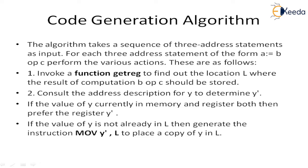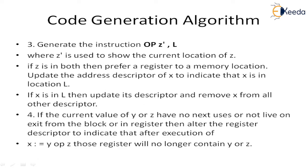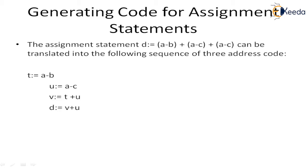The code generation algorithm basically contains four steps. The first phase involves invocation of the get_register function. The second step consults the address descriptor for register values and memory locations. The third step generates instructions with the appropriate operator. The fourth step finds the current value of the register or variable under operation and resolves the environment.